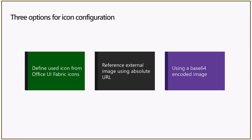The second option is referencing an external image using an absolute URL. Theoretically you could use a relative URL, but in practice an absolute URL is what you'll use to make things work. That means you need to figure out a location where the image is hosted, with URLs accessible by the persons using the web part, and whenever the web part is added to a page it will request the image from that location.